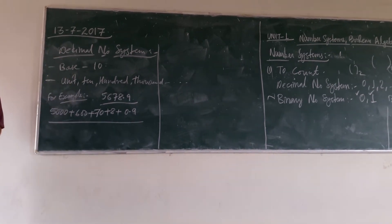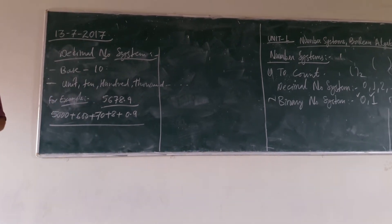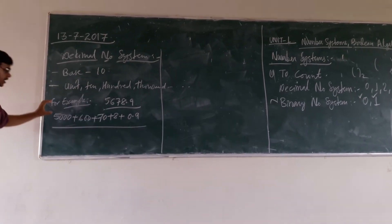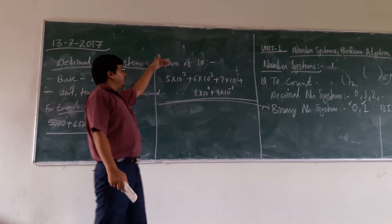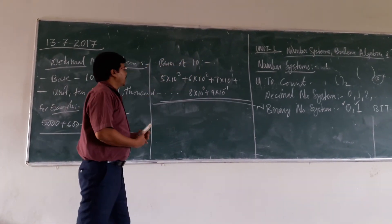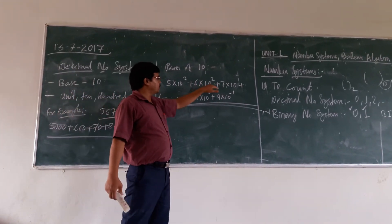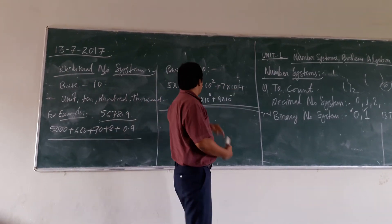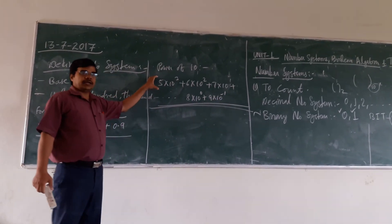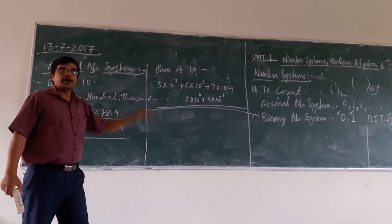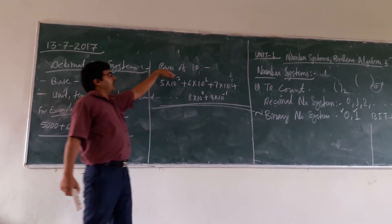This is your decimal number system. Now this number we can even represent in powers of 10. If you are representing this number in powers of 10: 5 into 10 to the power 3, plus 6 into 10 to the power 2, plus 7 into 10 to the power 1, plus 8 into 10 to the power 0, plus 9 into 10 to the power minus 1. This representation is called the power of 10.